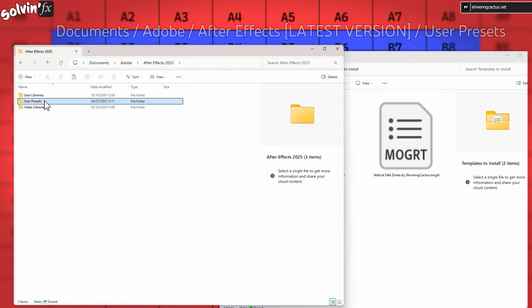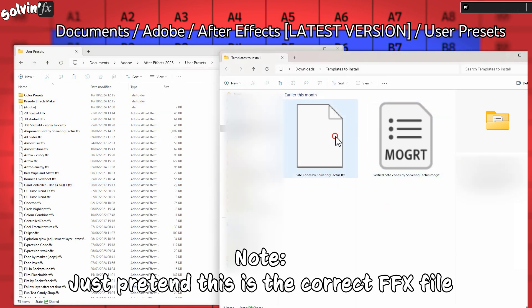To install the preset for After Effects in Windows, navigate to your users area My Documents.